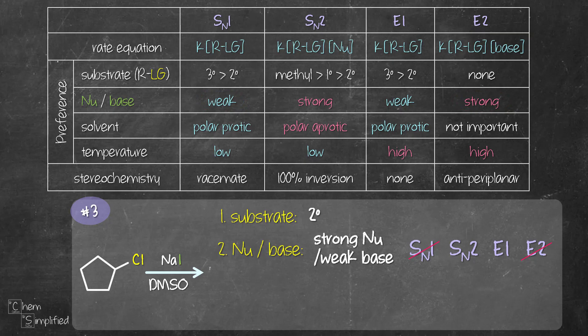Next, we look at the solvent DMSO. It's polar aprotic, which means it's more favorable for SN2. Now we keep going and look at the temperature. Since there's no heat indicated, the temperature is low. So confirm SN2 is going to dominate over E1. We're gonna get the major product coming from SN2 mechanism.